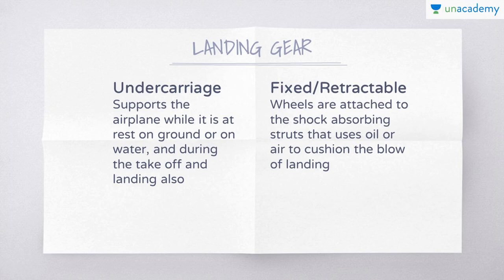About the landing gear: the landing gear, or undercarriage, supports the airplane while it is at rest on the ground or in water, and during takeoff and landing. The gear may be fixed or retractable. The wheels of most airplanes are attached to shock-absorbing struts that use oil or air to cushion the blow of landing. Special types of landing gear include skis for snow and floats for water. For carrier landings, arrestor hooks are also used.